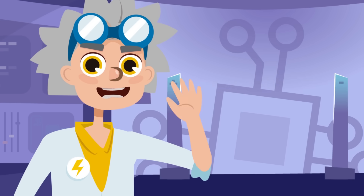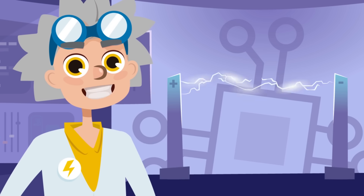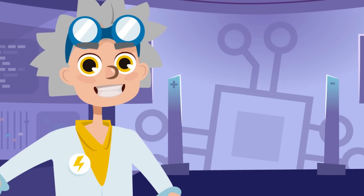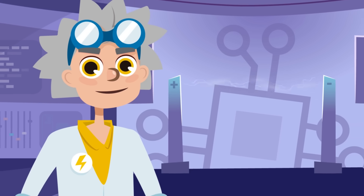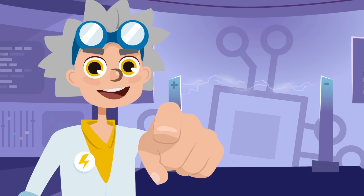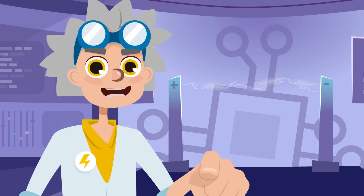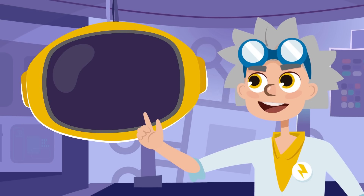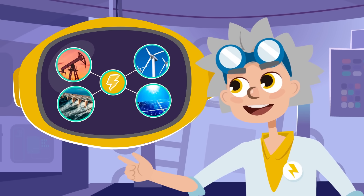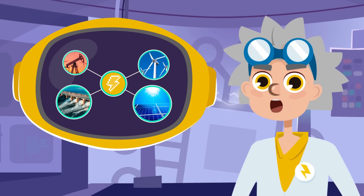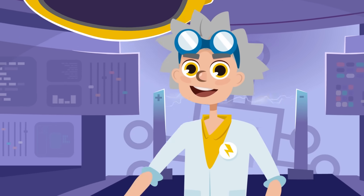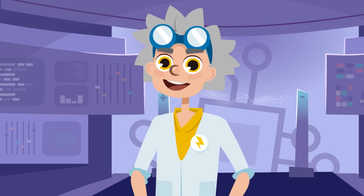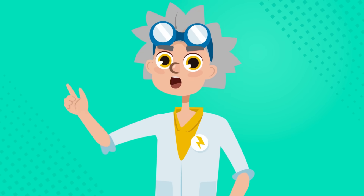Welcome back to Science Madness, a program where we discover, learn, and experiment with new things. In our last video, we learned what electricity was and where it came from. Today, we're going to learn about types of electricity and circuits. Are you ready?